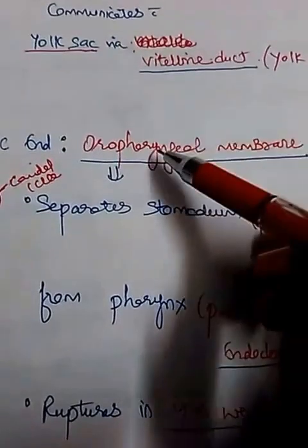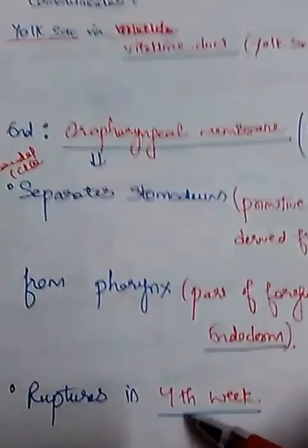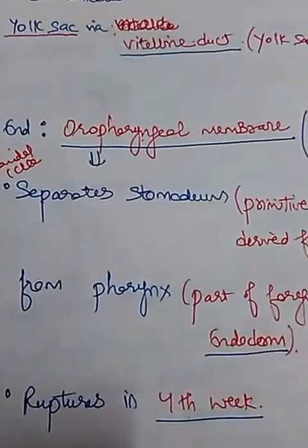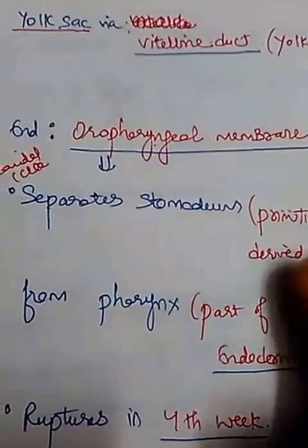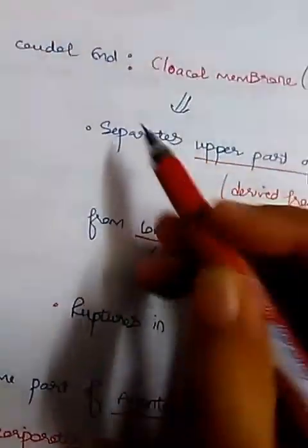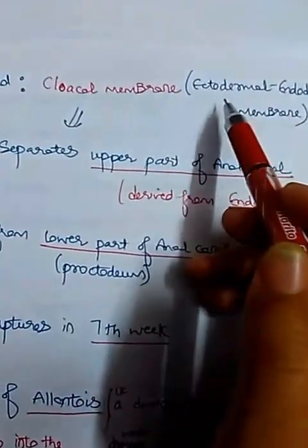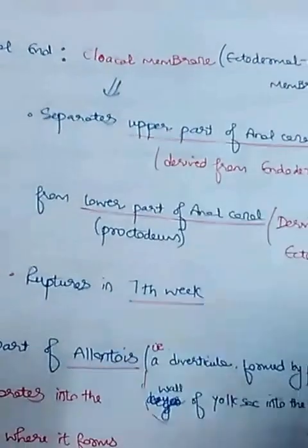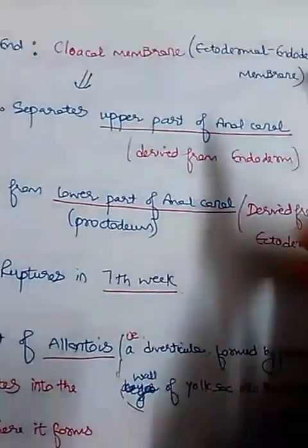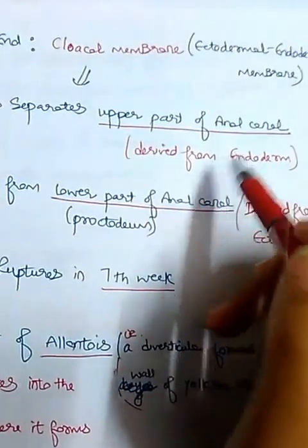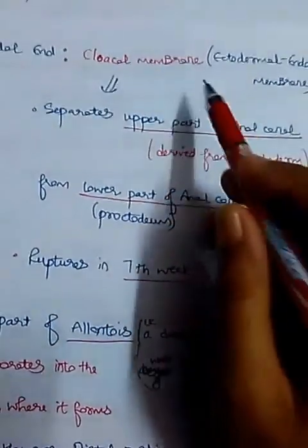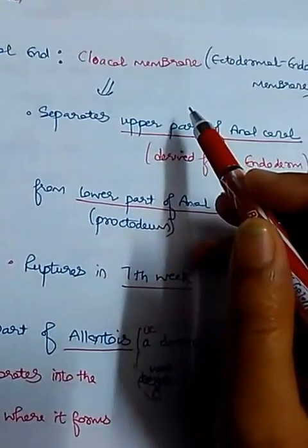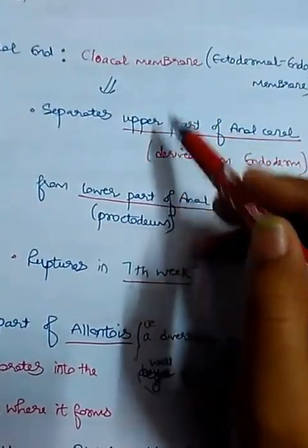The oropharyngeal membrane ruptures in the fourth week, while the cloacal membrane at the caudal end — also an ectodermal-endodermal membrane — ruptures in the seventh week. The cloacal membrane separates the upper part of the anal canal, derived from endoderm, from the lower part, derived from ectoderm. This is an important exam point.